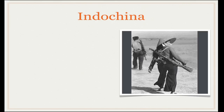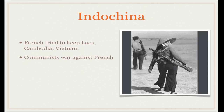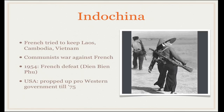Indochina was the French term for Vietnam, Cambodia and Laos. The French were very reluctant to lose these colonies, but an independence movement — many of whom were communists — waged war against France. In 1954, the French suffered a heavy defeat at the Battle of Dien Bien Phu in Vietnam and withdrew. Vietnam was then divided, and the USA propped up a pro-Western government with economic and military aid until 1975, when Vietnam was unified under a communist regime.